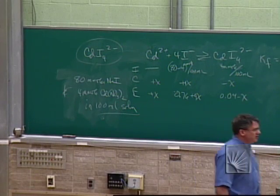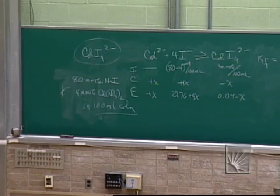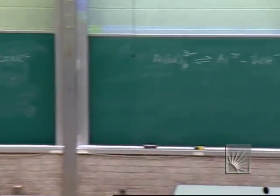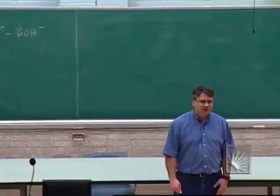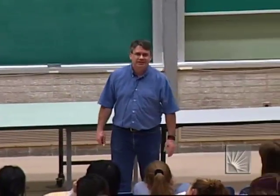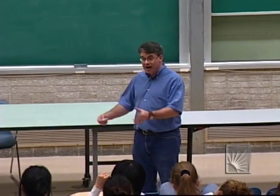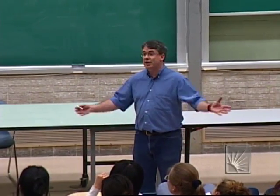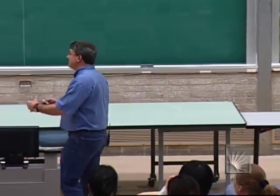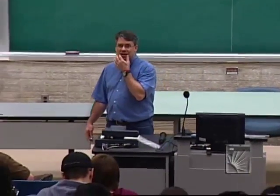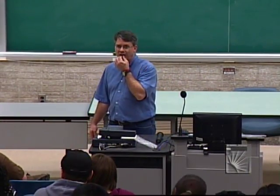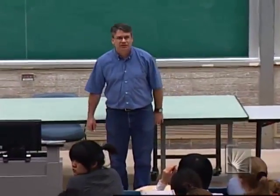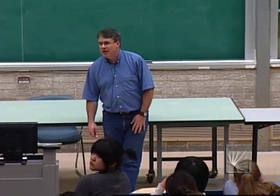Start with 80 millimoles of sodium iodide and 4 millimoles of cadmium nitrate in 100 milliliters of solution. Why sodium iodide? Because group 1 compounds are soluble — I don't care about sodium. Why cadmium nitrate? Because all nitrates are soluble — I don't care about nitrate.